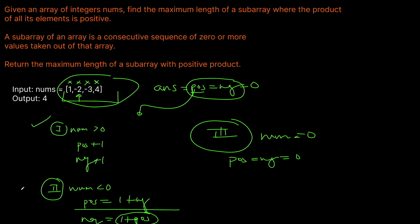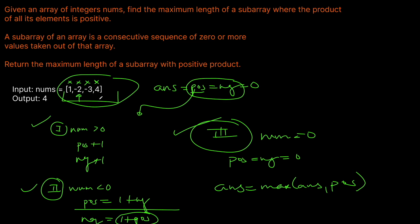At each iteration through the loop, we'll make one of those three updates and then update our answer. The answer will be the maximum of the current answer and the positive length, since positive is the length of the subarray that gives a positive result at any given index. Hopefully that makes sense — I know it's a little confusing, but once we go to the code it's actually really simple, about 10 lines. I'll see you in the editor.